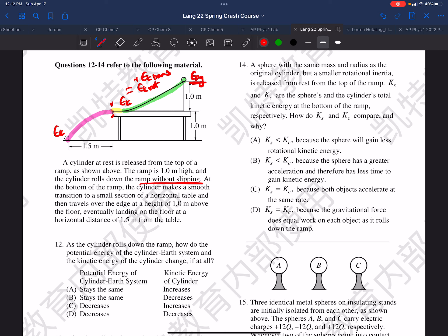So you want to know, as it rolls down the ramp, so that is the green section. So we're only talking about the green section.